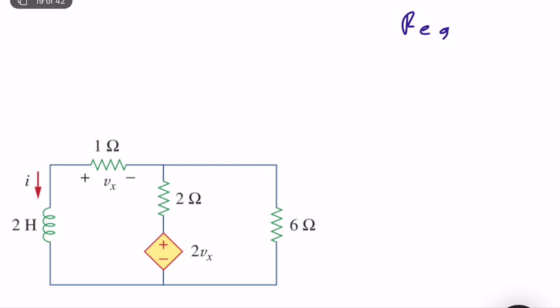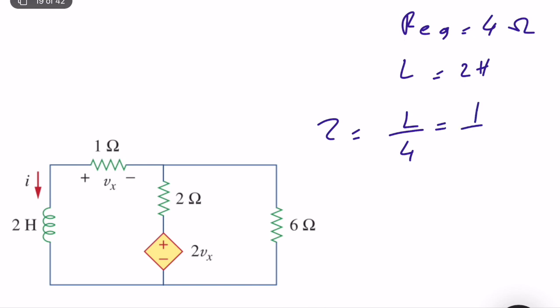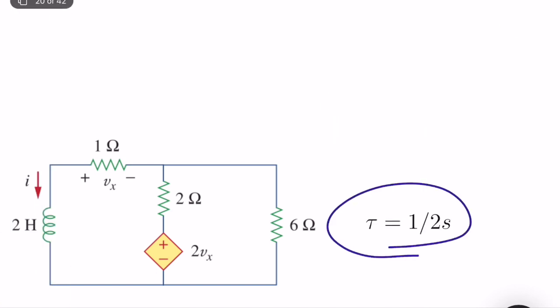With R_eq = 4 Ω and L = 2 H, the time constant is τ = L/R_eq = 2/4 = 1/2 seconds. This approach mirrors the Thevenin equivalent technique — isolate the single energy storage element and analyze the remaining circuit for R_eq. Given the initial inductor current I₀, the solution is i(t) = I₀·e^(−2t), and from i(t) any other variable such as Vx can be found.